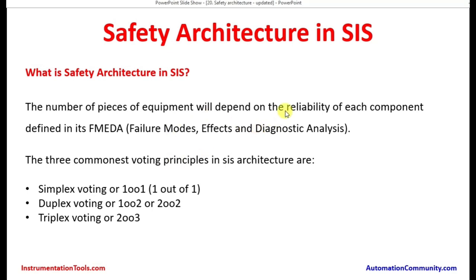As explained in an earlier presentation, these are detailed terminologies which students need to learn when going into a detailed technical training course. The common voting principles in SIS architecture are simplex voting or one-out-of-one, duplex voting which can be one-out-of-two or two-out-of-two, and triplex voting which is two-out-of-three.